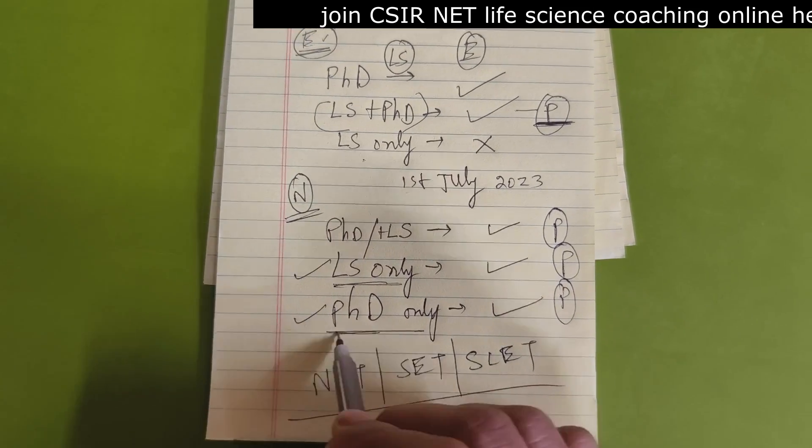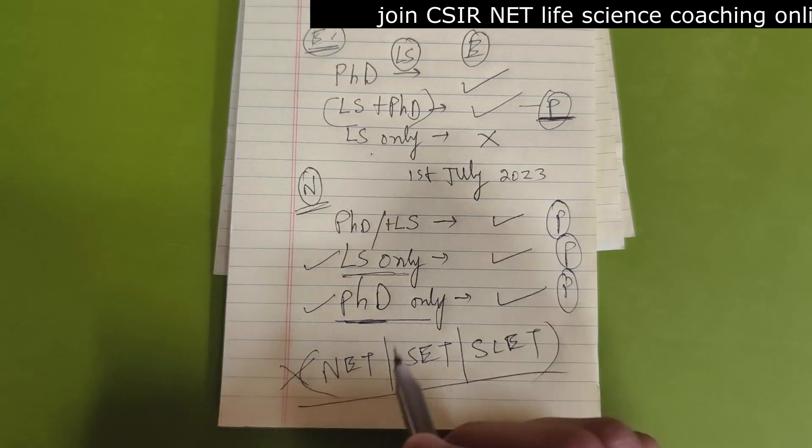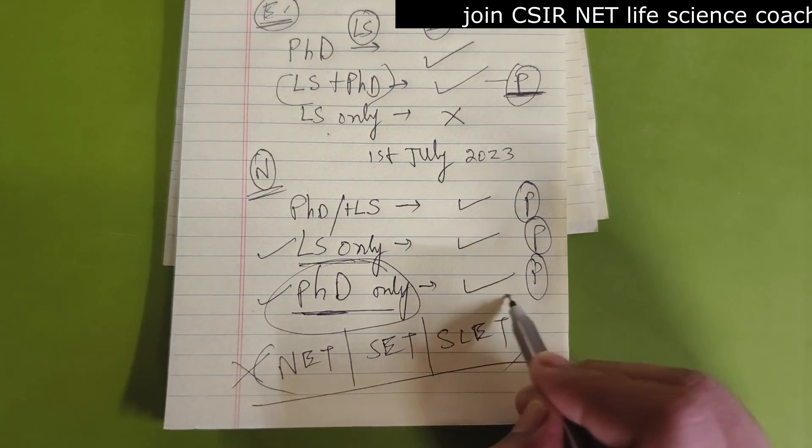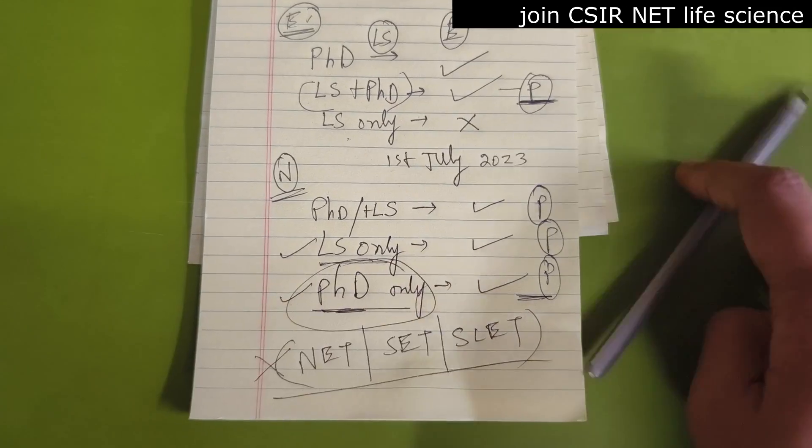If you are PhD only, then this rule is exempted. So you don't need to follow this rule. If you have only PhD, still you are capable to become an assistant professor.